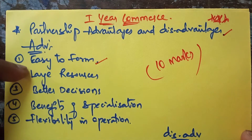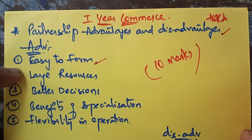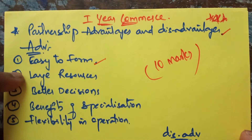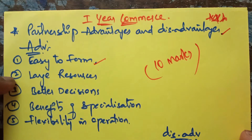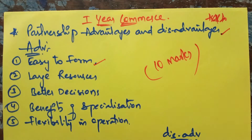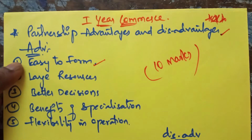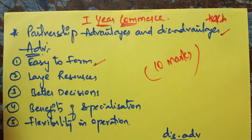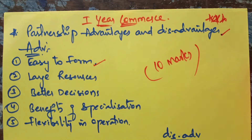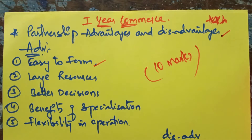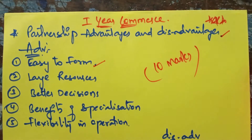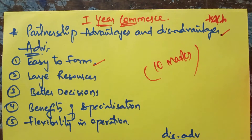The first advantage of partnership is that it can be easily started — just like sole trading, a partnership firm can also be started quickly. No formalities are required; registration is not mandatory. Unlike a company, you need not prepare documents like memorandum, articles, list of directors, etc. It can be started simply with an agreement among the members.